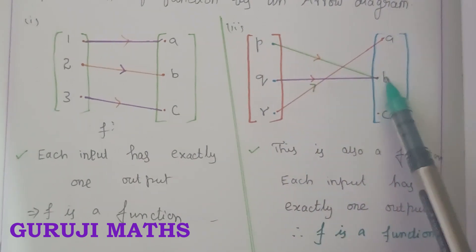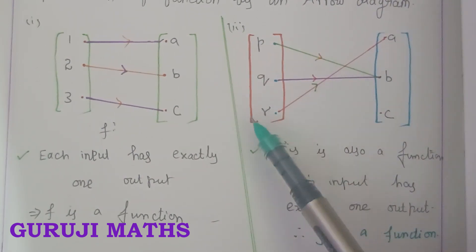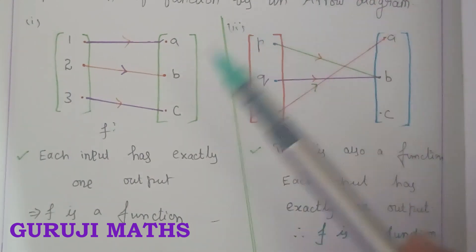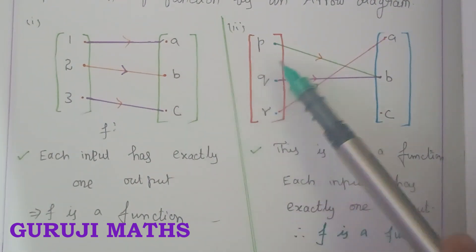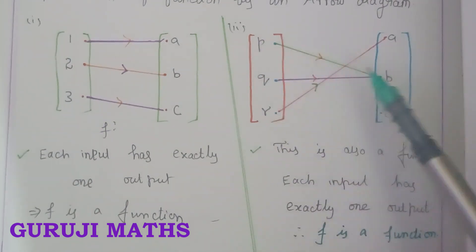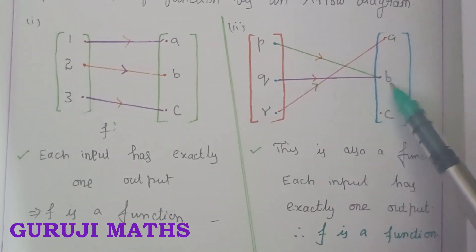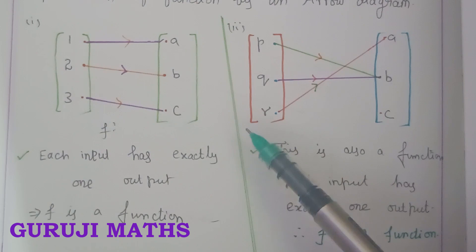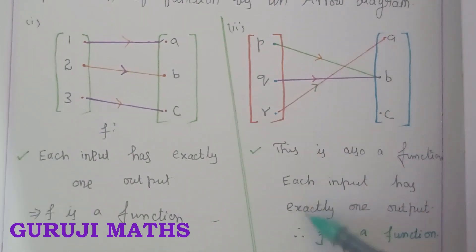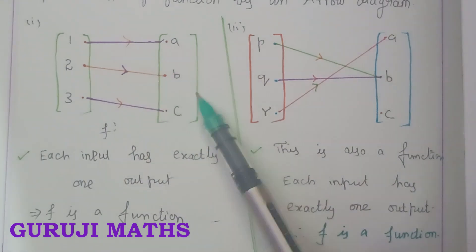Multiple inputs can map to the same output — for example, different inputs can all map to the same output value. This is also a function.